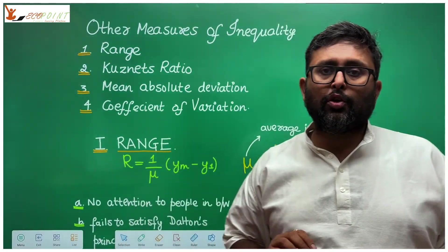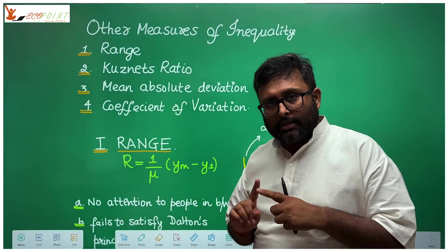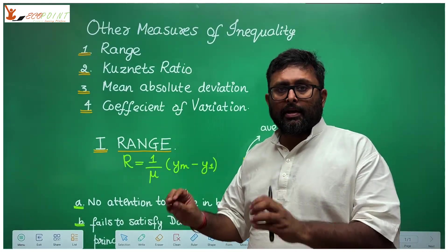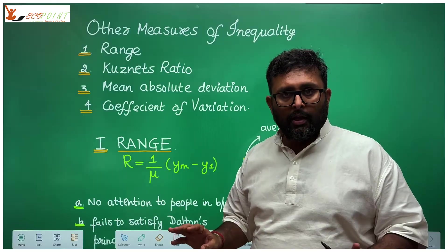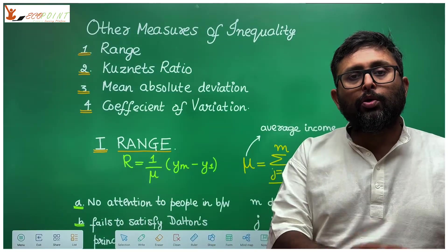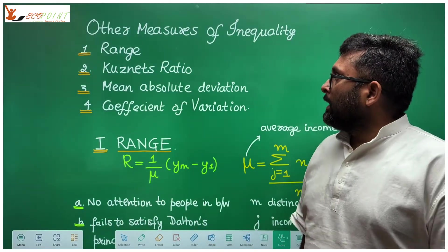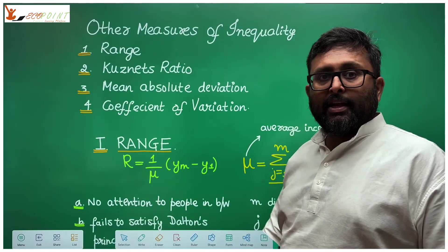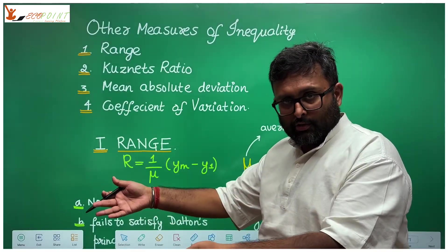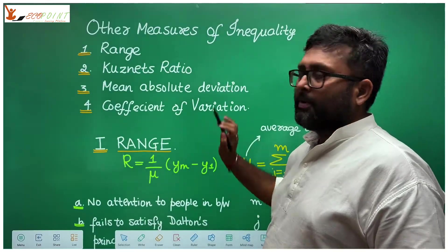Another disadvantage of Lorenz Curve is that in case the two Lorenz Curves are going to cross, you will not have an answer. Lorenz Curve will not be able to tell which country is more unequal. Now there are other measures of inequality apart from Lorenz Curve. Because there is a disadvantage in Lorenz Curve, we have other measures.